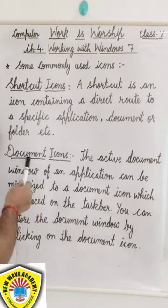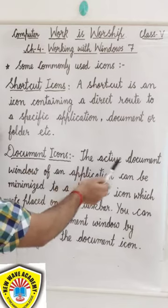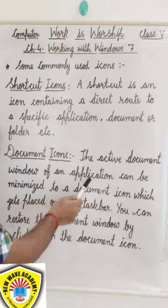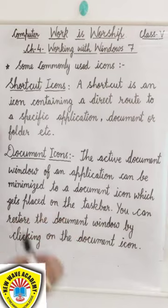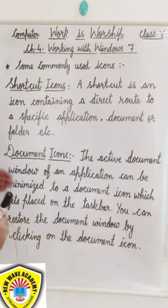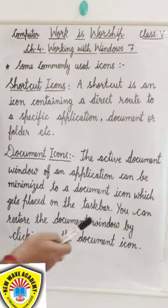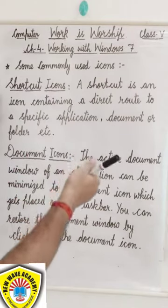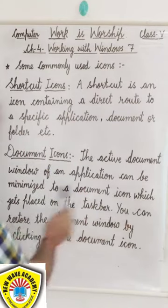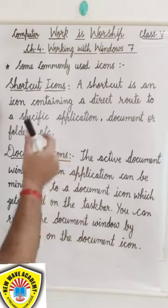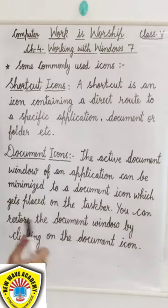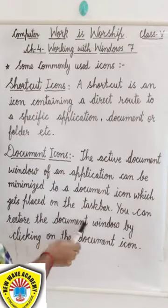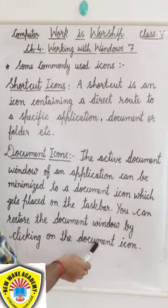Next, document icons. The active document window of an application can be minimized to a document icon. When there is no active window on the computer screen, we can minimize it and open another window, which gets placed on the taskbar. You can restore the document window by clicking on the document icon.